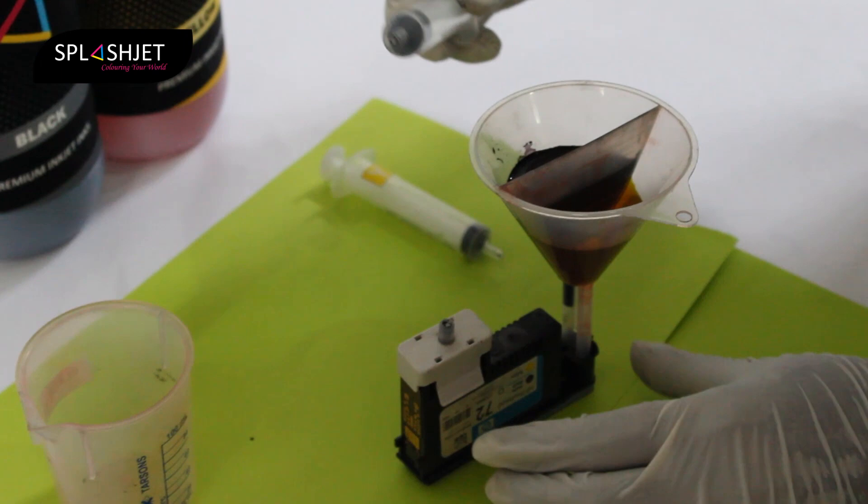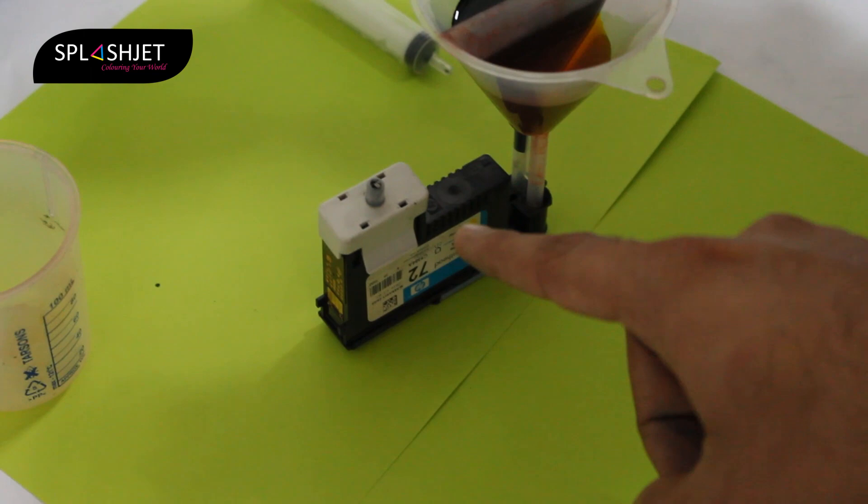Here we have poured ink inside the funnel. Here is yellow ink. Here is matte black ink. The priming adapter is fitted on the print head.